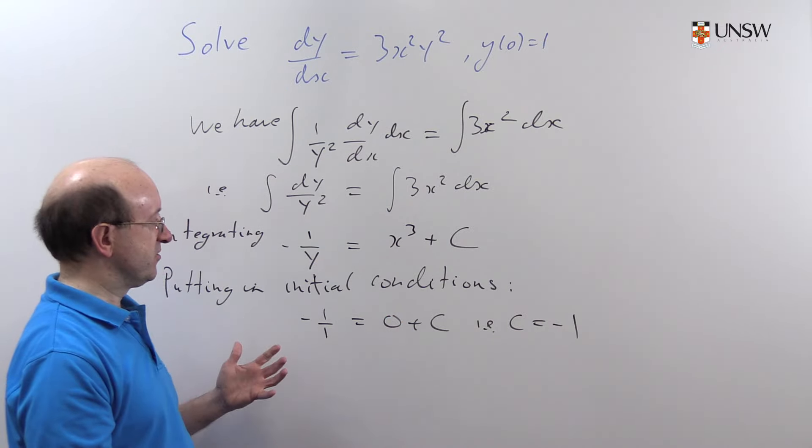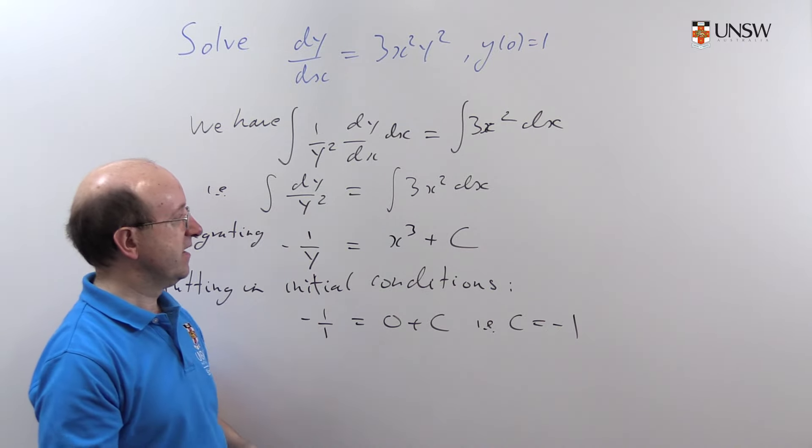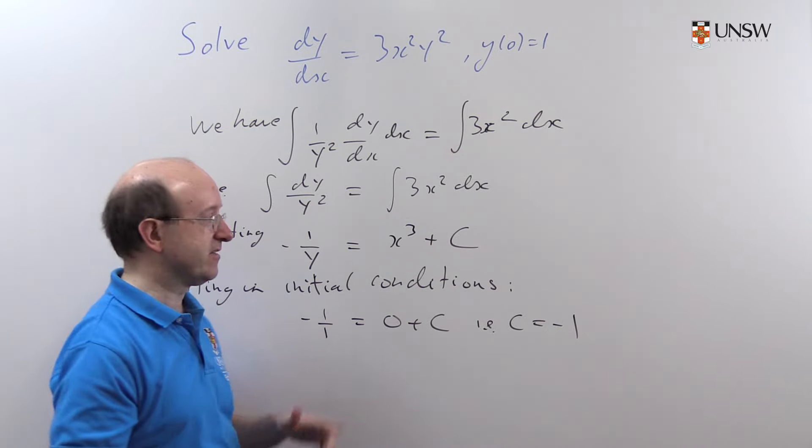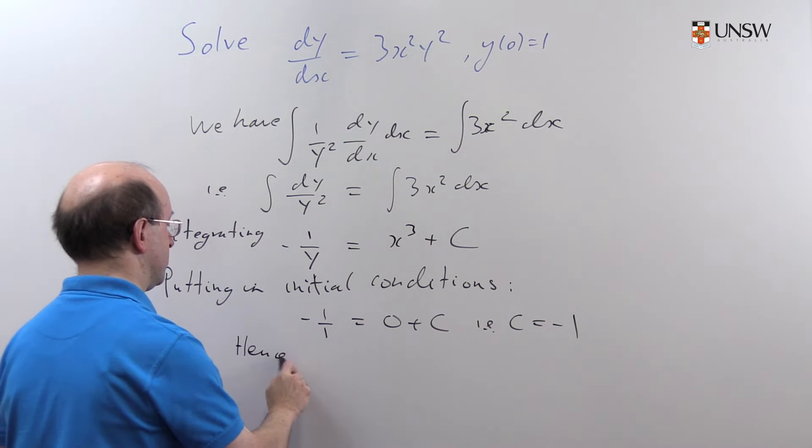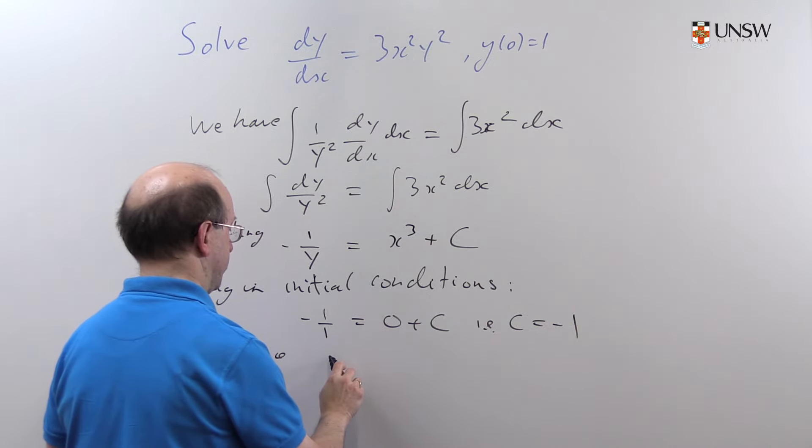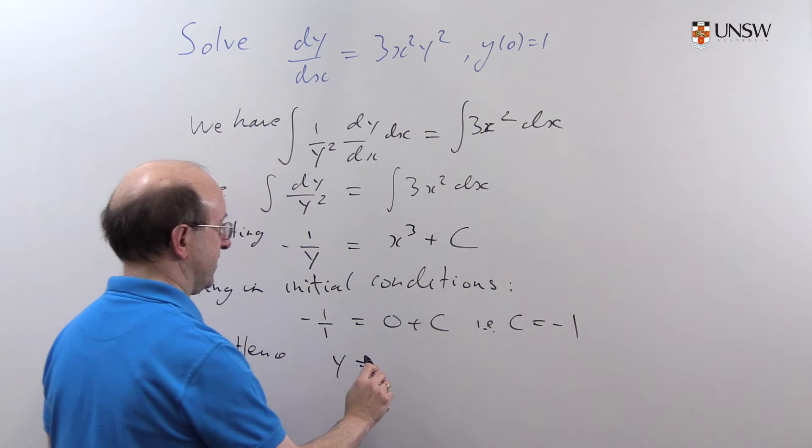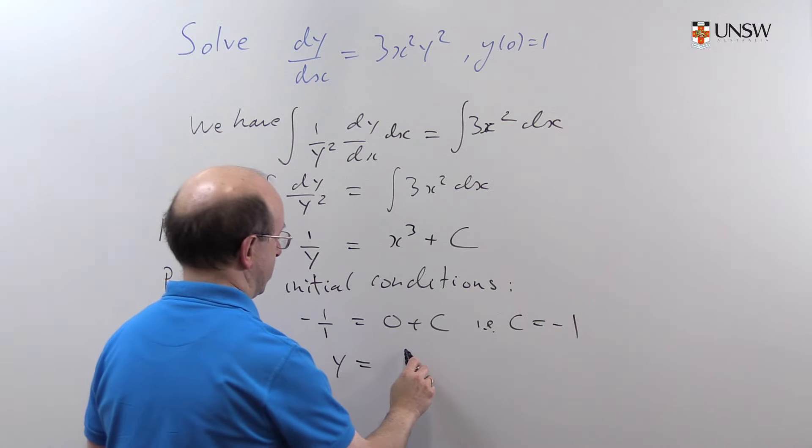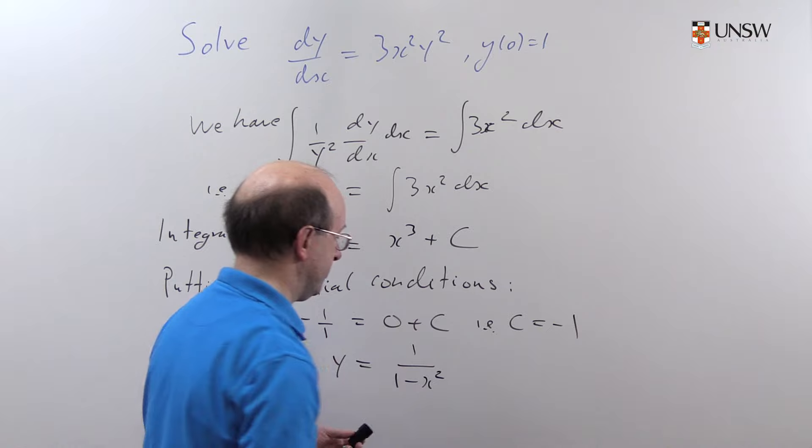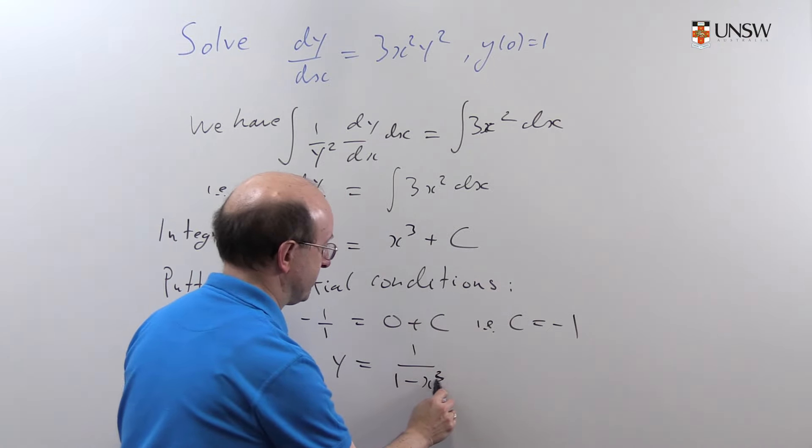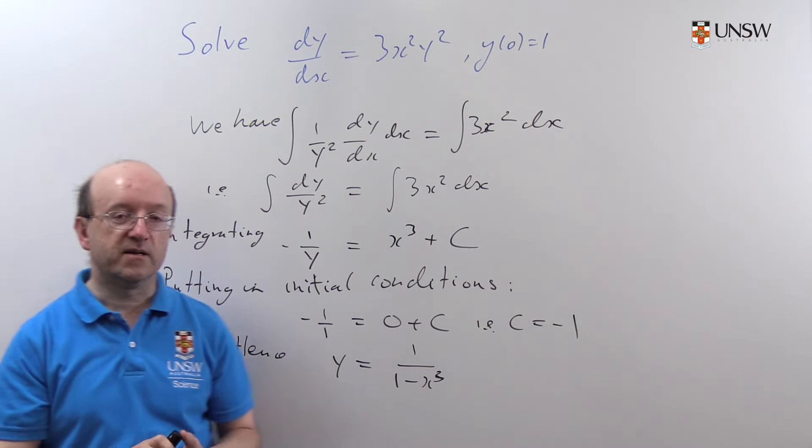And we've finished the problem. -1/y = x³ - 1. You could leave it like that, or you could rearrange it a bit to get the solution, which will be y equals—well, we'll write it this way, I think it's the most convenient—1/(1 - x³). And that's our solution.